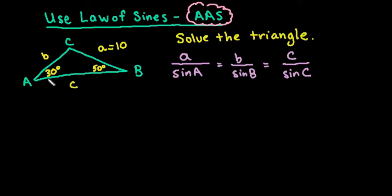Angle-Angle-Side means that you have two angles and a non-included side. So if it was Angle-Side-Angle, that means the side in between would be given.